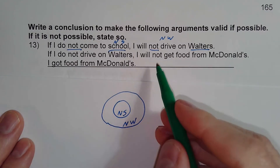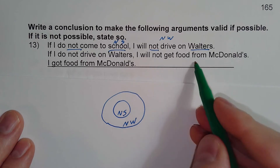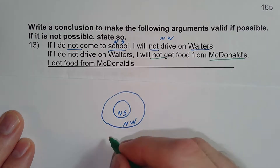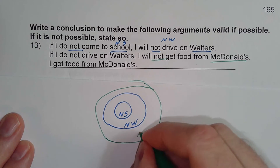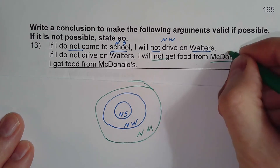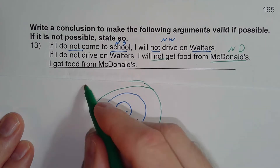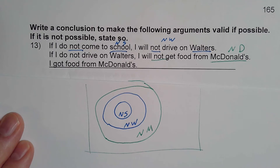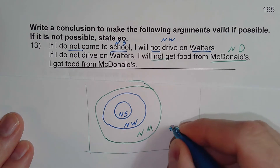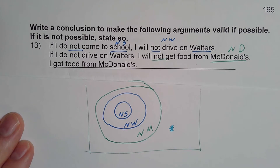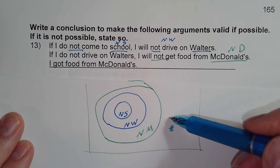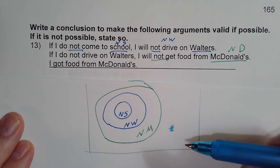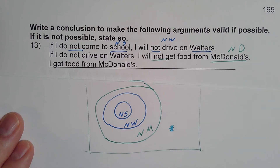If I do not drive on Wolters I will not get food from McDonald's — so this would be no McDonald's. Now it says I got food from McDonald's, which means I'm outside that circle. And if I'm out there, that means I did drive on Wolters and I did go to school. So a possible conclusion is: therefore I came to school.